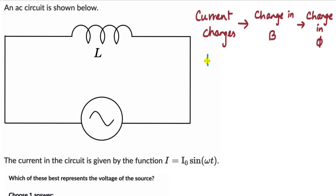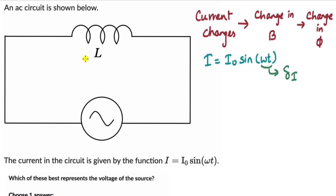There is a phase difference between the current and the voltage. We have the current function I₀sin(ωt), where ωt is the phase of the current. The phase difference between voltage and current in a purely inductive circuit is 90 degrees, and the voltage leads the current by 90 degrees because it took some time for the current to build up.